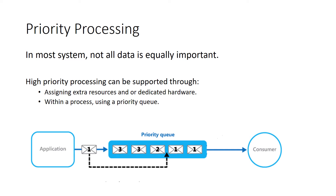Another concept to discuss is priority processing. In most systems, not all data is equally important. In our problem solution, modules that detect and prevent in-flight collisions process data that is more time-sensitive and more important than modules that store historical data. Those modules can be assigned additional resources based on the criticality of the feature.